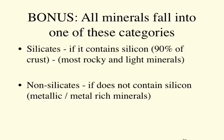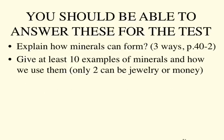All minerals — and rocks, which are made of minerals — fall into one of two categories: silicates or non-silicates. If it contains silicon, it's a silicate; if it doesn't, it's a non-silicate. Hopefully you can explain the three ways minerals form. Go to your book for more detail and look at at least ten examples of minerals that you can name.